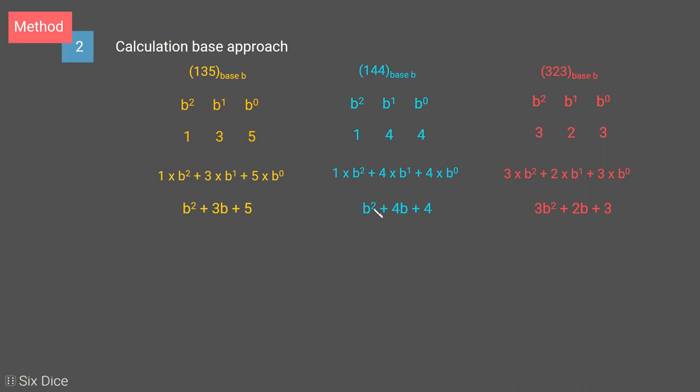The second number is b squared plus 4b plus 4, and the third number is 3b squared plus 2b plus 3. Now if we add them together, we have 2b squared plus 7b plus 9 equals 3b squared plus 2b plus 3.